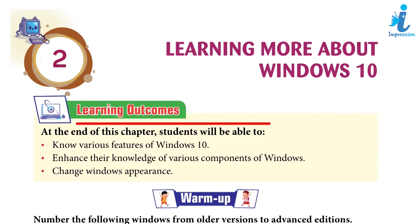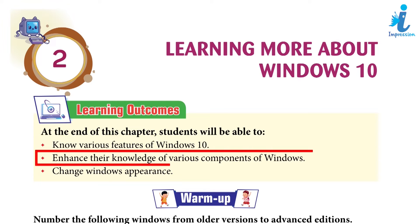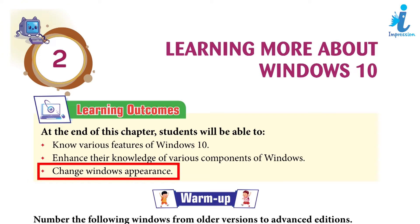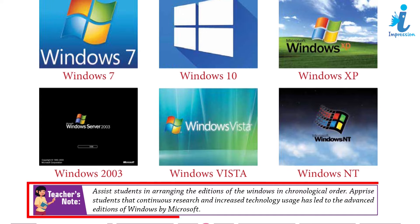Outcomes: At the end of this chapter, students will be able to know various features of Windows 10 and enhance their knowledge of various components of Windows. Warm Up: Number the following windows from older version to advanced editions. Teacher's Note: Assist students in arranging the editions of Windows in chronological order. Apprise students that continuous research and increased technology usage has led to the advanced edition of Windows by Microsoft.